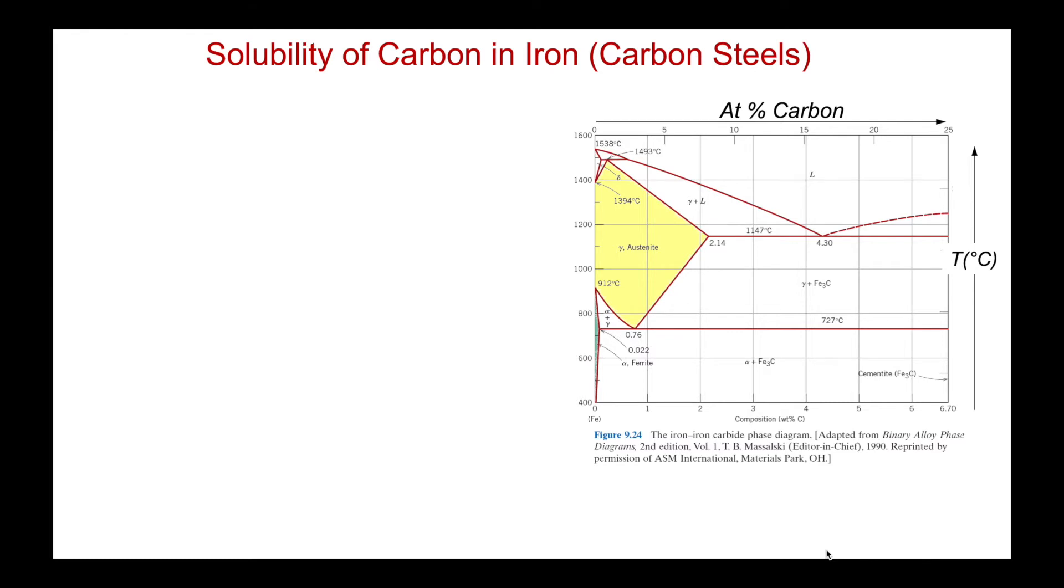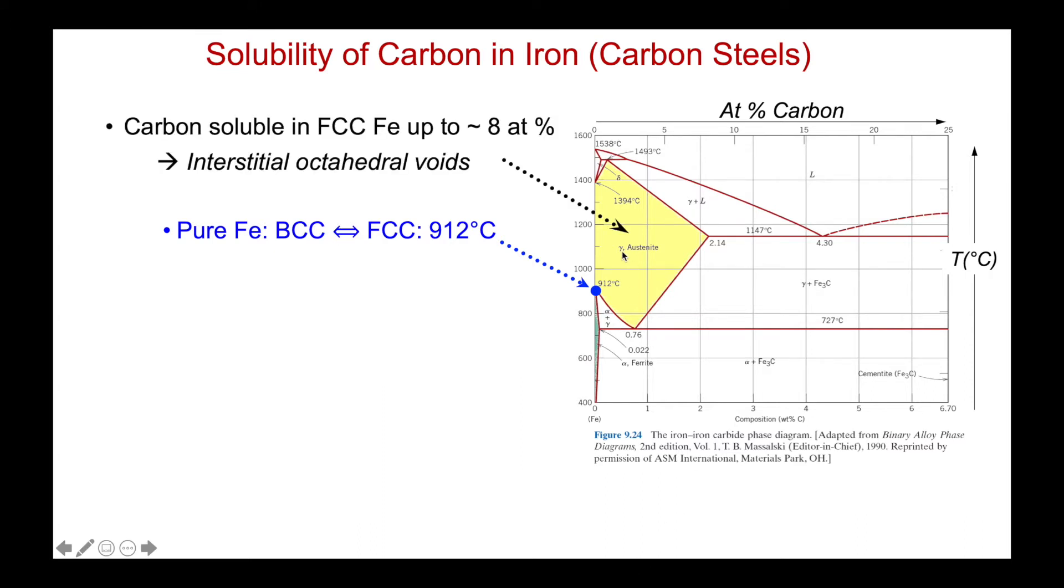Let's begin by looking at the solubility of carbon in iron, carbon steels. Here is a phase diagram of that system. Here we're plotting the composition of carbon versus temperature. Pure iron undergoes a transition from face centered cubic at higher temperature to body centered cubic at lower temperature at 912 degrees C. The higher temperature phase, the FCC phase, has a fairly wide range of solubility, or at least up to 8% carbon, and the carbon is entering the interstitial octahedral voids of the FCC structure. It's more than suited in terms of its size to those voids.